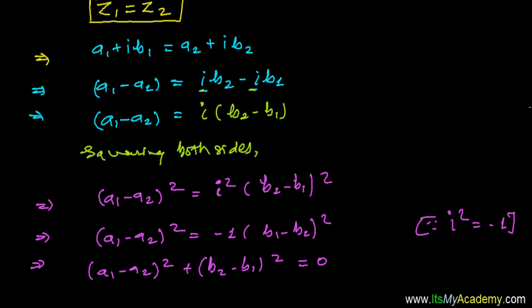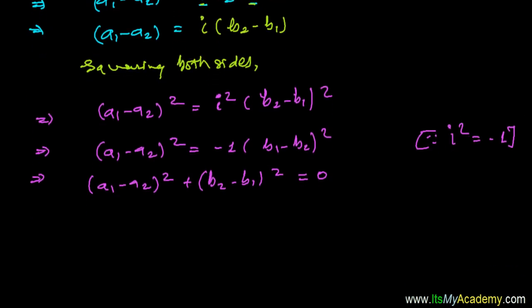Now take a look very seriously on this condition: (a1 minus a2) all square plus (b2 minus b1) all square. So this is only possible when this part is zero and this part is zero.